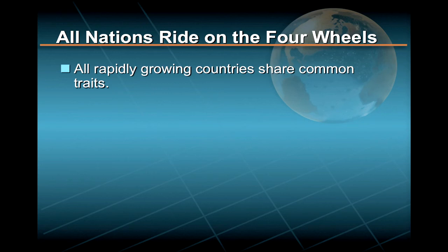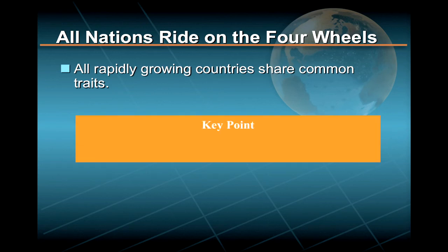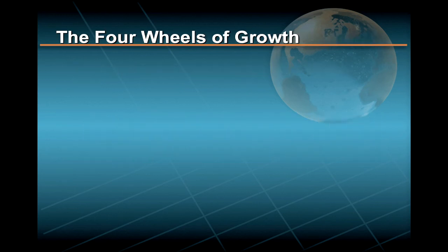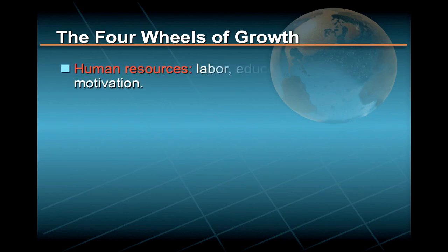Indeed, economists who have studied growth have found that the engine of economic progress must ride on the same four supply-side wheels, no matter how rich or poor the country. These four wheels, or supply factors of growth, are: human resources, including labor supply, education, discipline, and motivation; and natural resources,